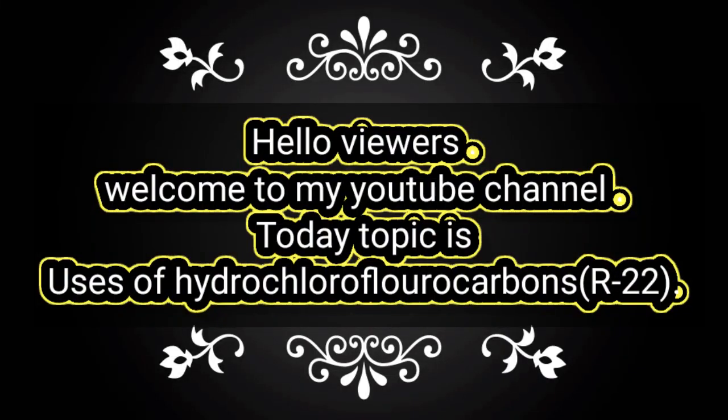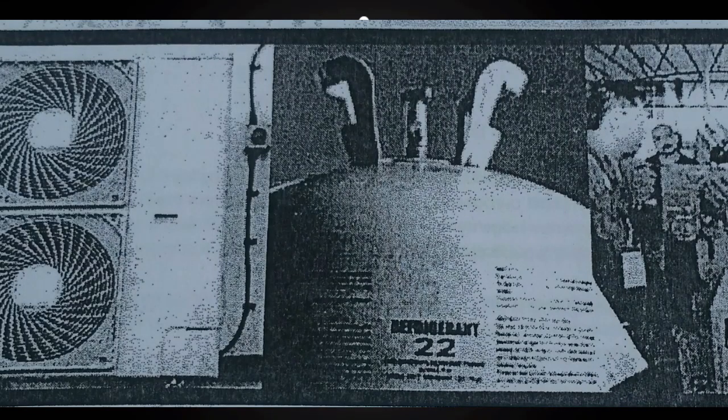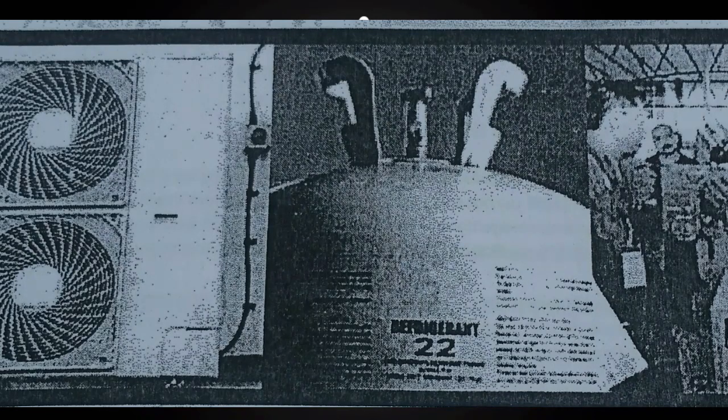Welcome to my YouTube channel. Today's topic is the uses of hydrochlorofluorocarbons. Hydrochlorofluorocarbon contains hydrogen, chlorine, and carbon and is not a naturally occurring gas, but a man-made chemical. Commonly known as R-22, hydrochlorofluorocarbon-22 is a commonly used refrigerant found throughout the air conditioning industry in a variety of applications, including window units, central AC systems, and transport refrigeration units.